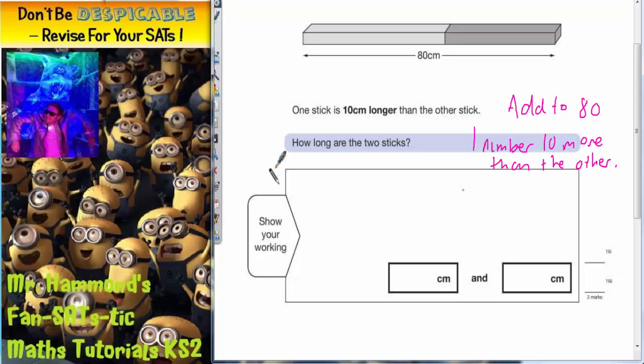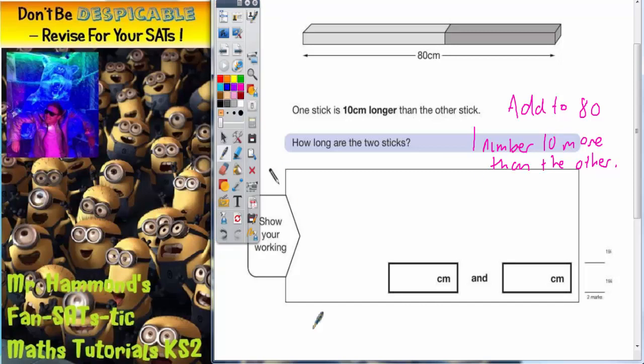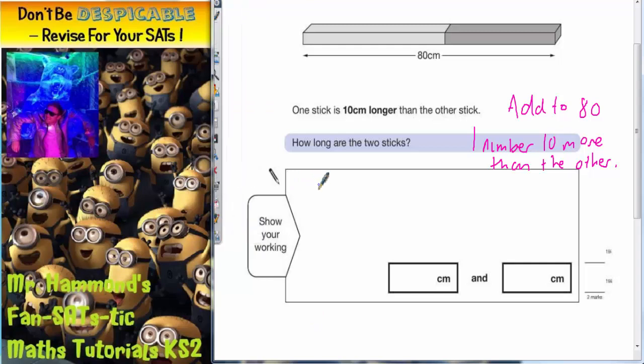One method of doing this is just to do a bit of trial and error. So if we start with two sticks, if one stick was 10 and the other stick was 70, does that add up to 80? Yes, it does, but is one 10 more than the other? No, because that's a gap of 60.